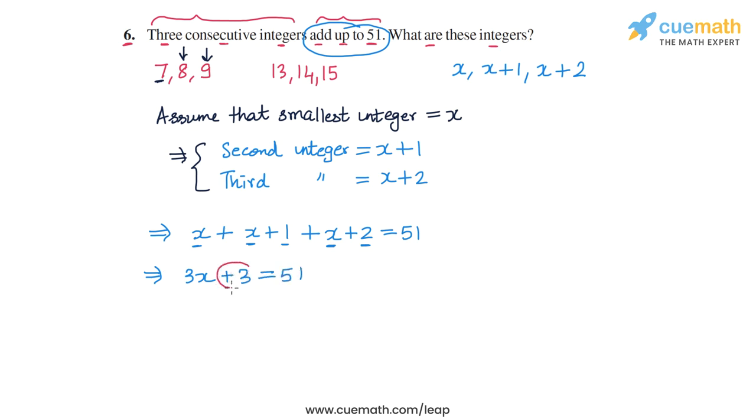Now, let's take this plus three and transpose it to the right side. So we will get three x is equal to 51 minus three. So 51 minus three is 48.